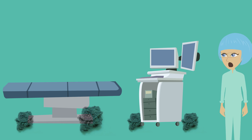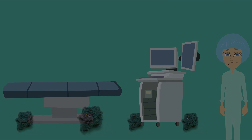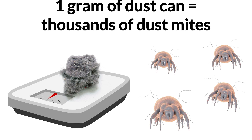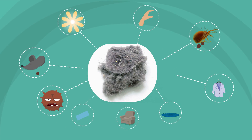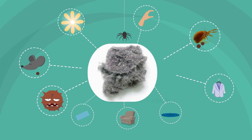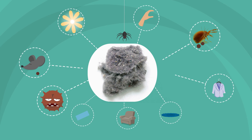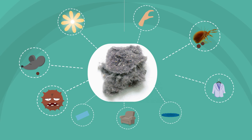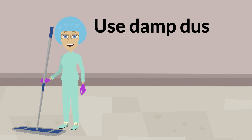As dust bunnies grow larger, they collect other debris and dust mites. This dust can contain many different types of unhealthy particles that can be an infection control risk, especially in a healthcare facility. One gram of dust alone can contain thousands of dust mites. Dust mite waste can cause sneezing and more serious health problems in those who are allergic. Dust found in healthcare facilities can contain human skin cells, dust mites and dust mite feces, mold spores, bacteria and viruses, hairs, rodent waste, insect particles, and fabric and fibers from clothing, carpet, upholstery, and surgical wraps. Clean using damp dusting and damp cleaning techniques to minimize dust disruption.